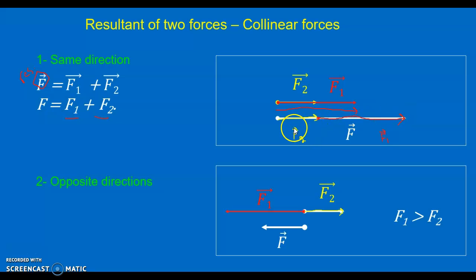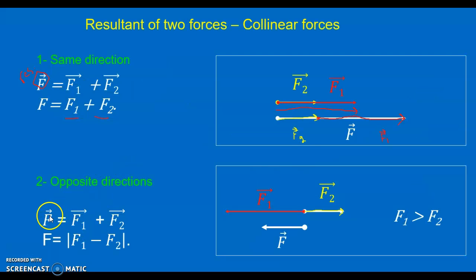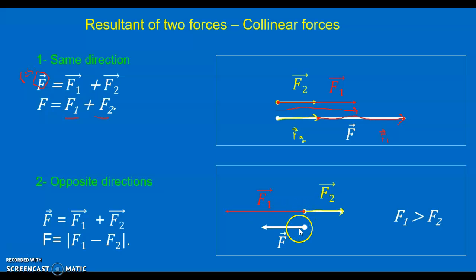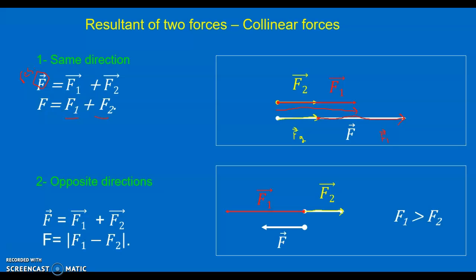If we represent the two vectors consecutively, we can see that they fit into the resultant vector. For opposite directions, we still apply the same vector rule: F resultant = F1 vector + F2 vector. However, to find the magnitude, one force wins over the other, so the resultant is in the direction of the larger force. The magnitude equals the difference of the two magnitudes, and we use absolute value to ensure a positive result.